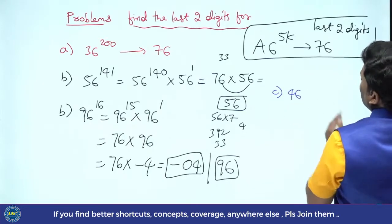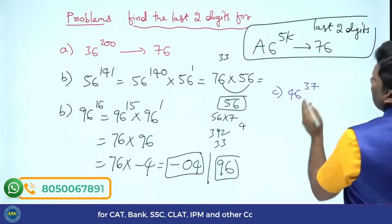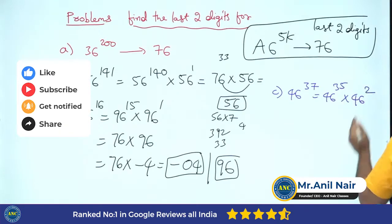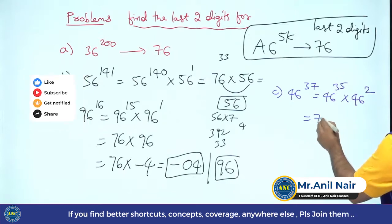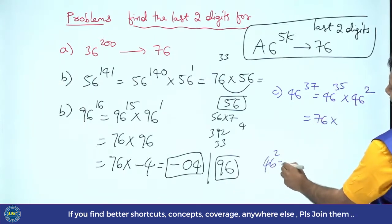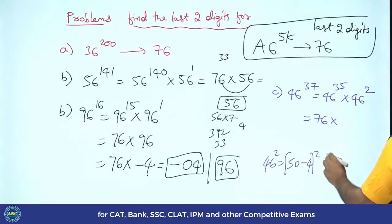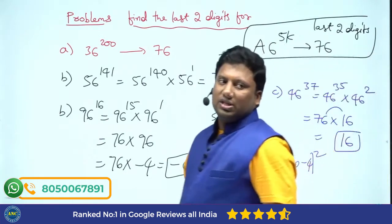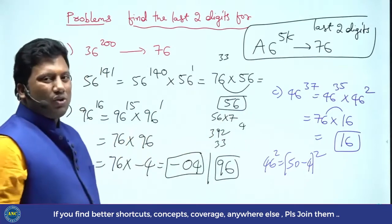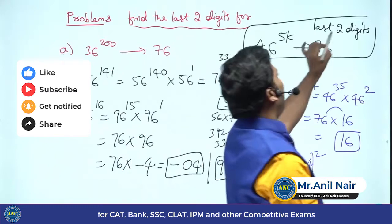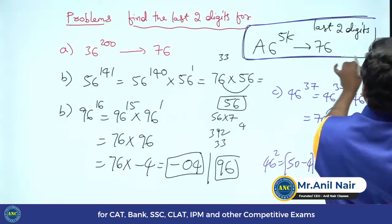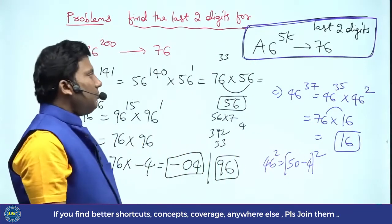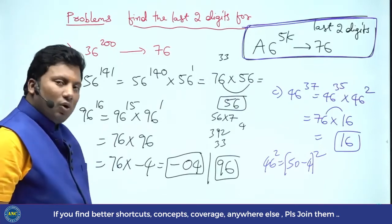Suppose if the question is 46 power 37. 46 power 37 is 46 power 35 into 46 square. A6 power 5k, last two digits is 76. 46 square is 50 minus 4 square, last two digits is 4 square - 16. 76 multiplied by any power of 2, last two digits is nothing but 16. Very easy questions. If you get this kind of questions, consider yourself lucky. A6 power 5k, last two digits is always 76. I hope the idea is clear.